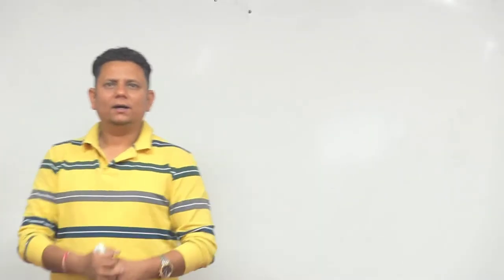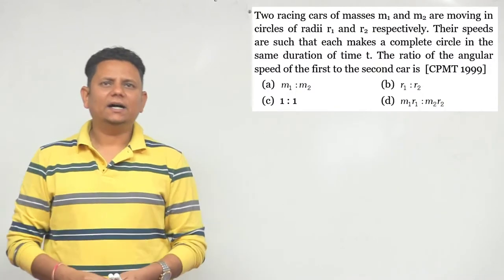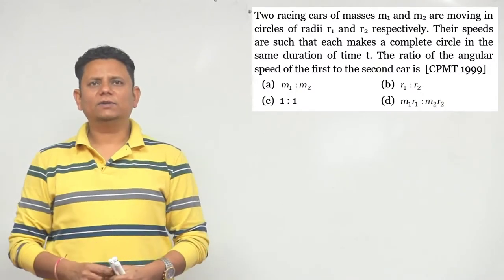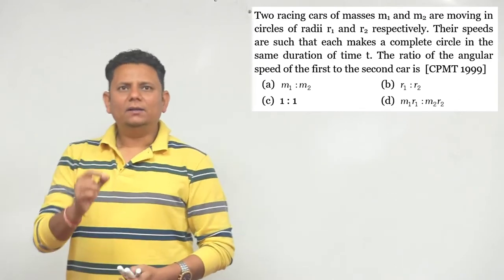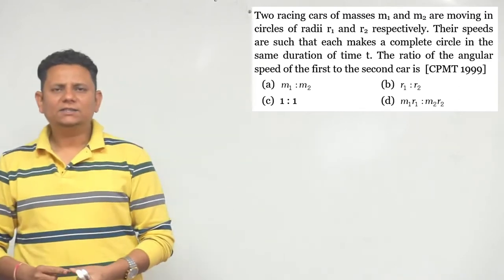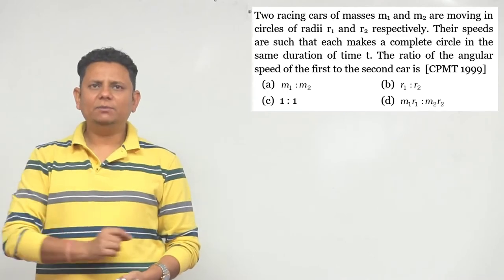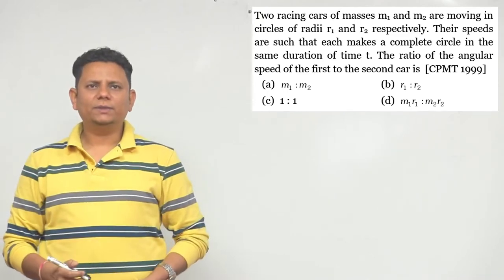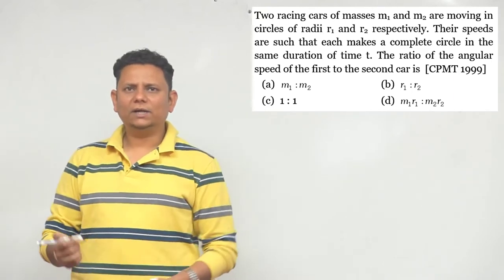Question 99: Two racing cars of mass m1 and m2 are moving in circles of radii r1 and r2 respectively. Their speeds are such that each makes a complete circle in the same duration of time t. Find the ratio of angular speed.